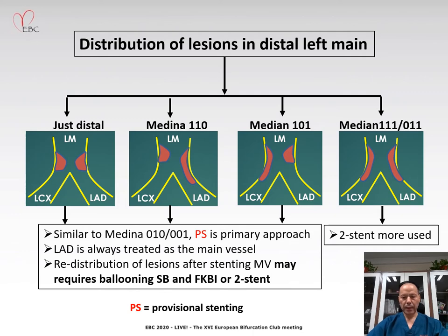On the other hand, for Medina 111 or Medina 011 bifurcation lesions, the two-stent technique is much more commonly used.